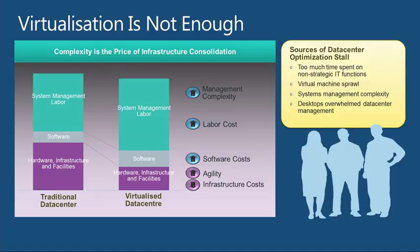Virtualization, as great as it is, is not enough. Looking at a traditional data center versus a virtualized data center, we can see lower infrastructure costs from a purely hardware perspective as you consolidate and bring more workloads. Your agility goes up, but then your software costs go up, your labor costs go up, and your management complexity goes up. So overall the difference between those two graphs shows a reduction, but a very slight one.